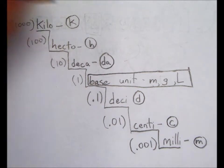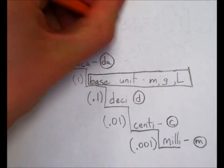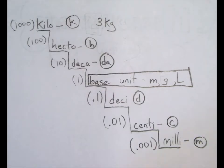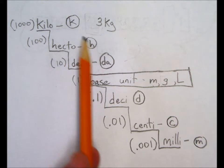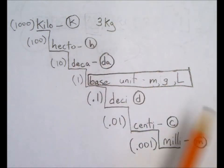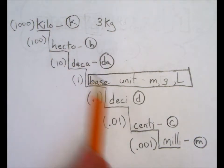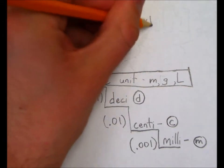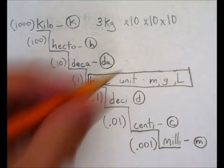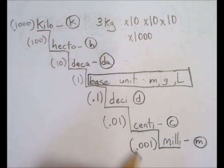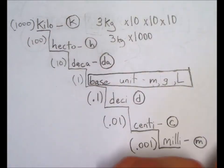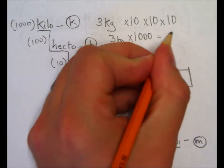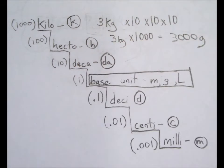Now, if we want to convert something, say we have 3 kilograms, 3 kg, and we want to get to grams. We want to see how many of our base unit we have. What we do is for every step of the staircase between our starting unit and our ending unit, we multiply by 10. So, we have 1, 2, 3 steps to get to the base unit. That means we're going to multiply by 10 by 10 by 10, which you could simplify as times 1000. So, 3 kilograms times 1000 equals 3000 grams.